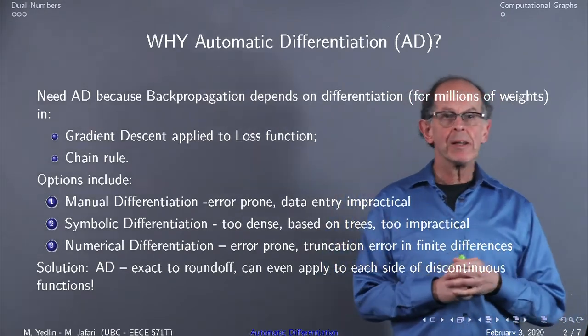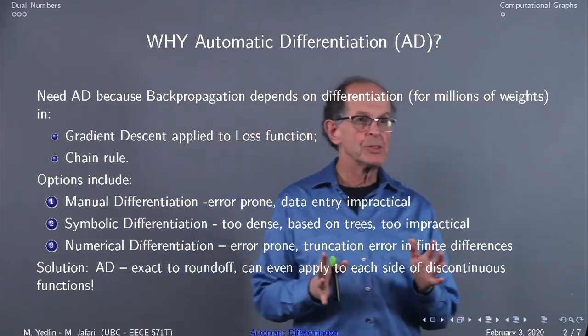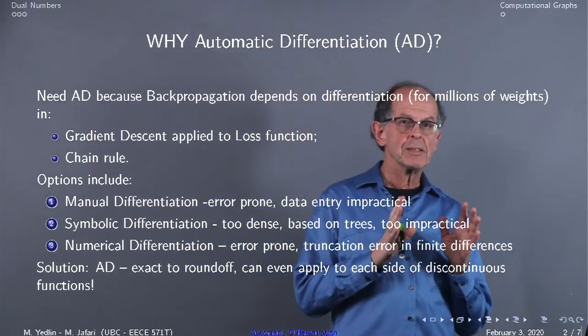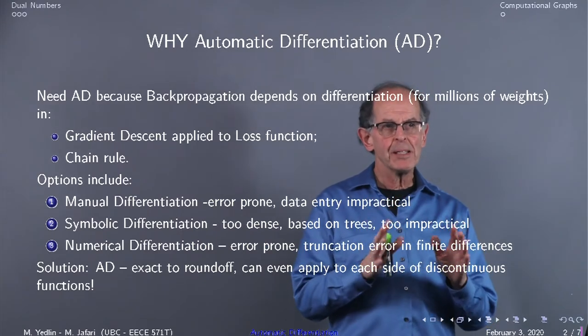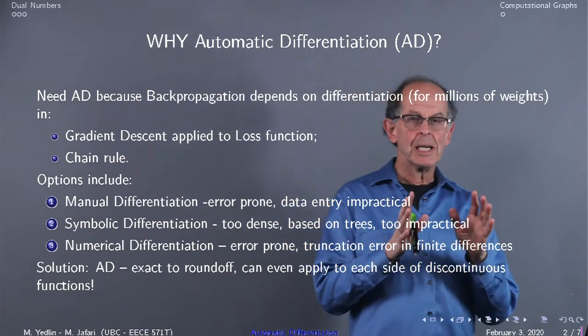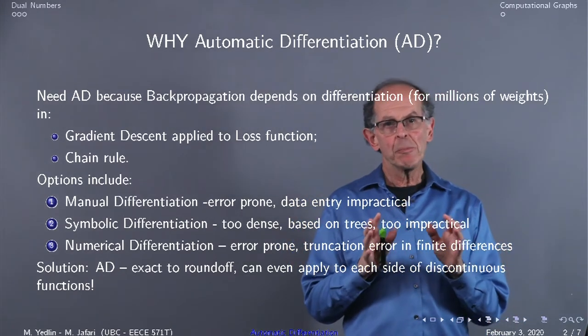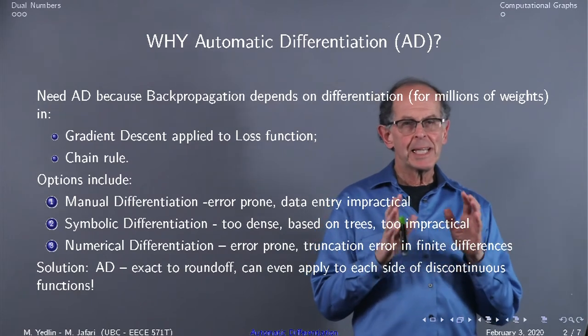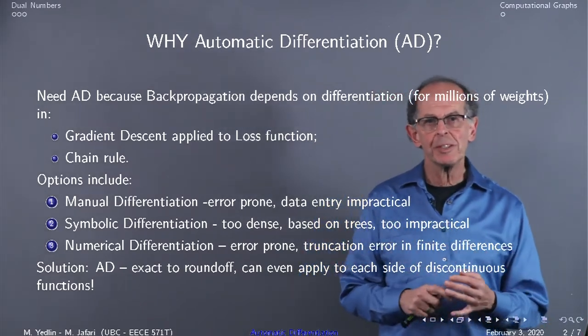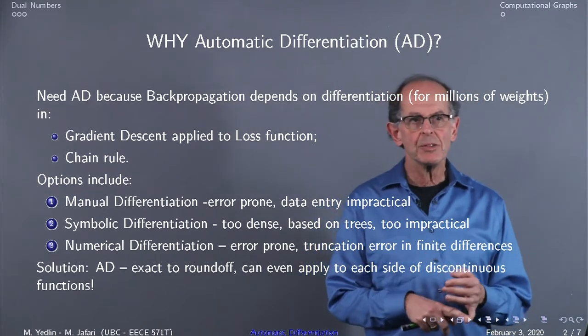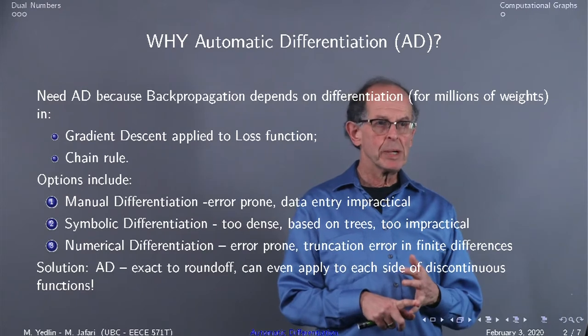Why do we use automatic differentiation? We need it because backpropagation depends on differentiation, and if you have millions of weights, we're going to have a problem. We need differentiation in gradient descent and in the chain rule to update our weights.